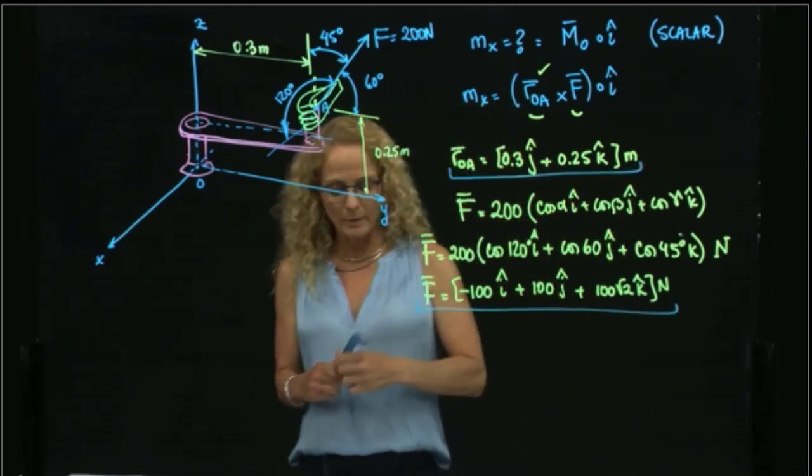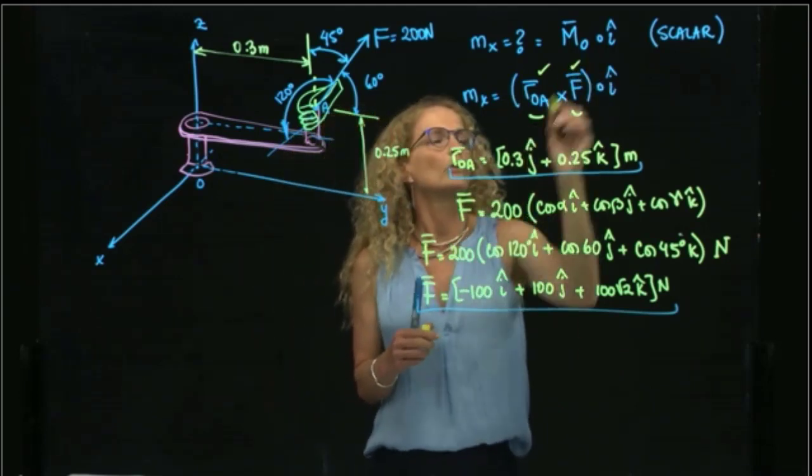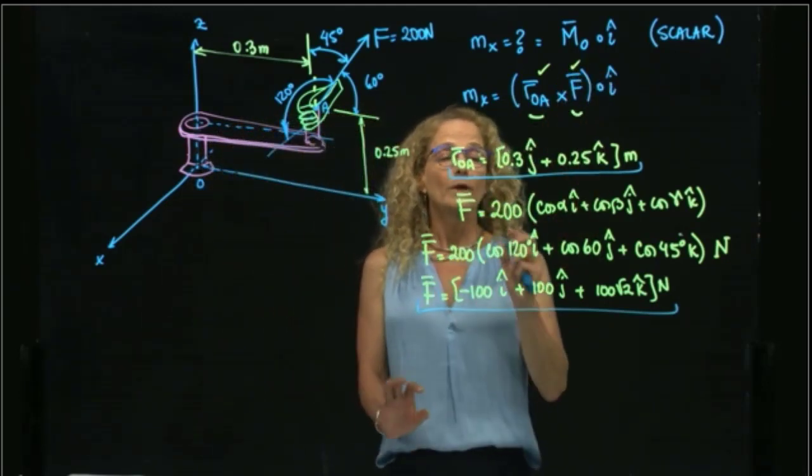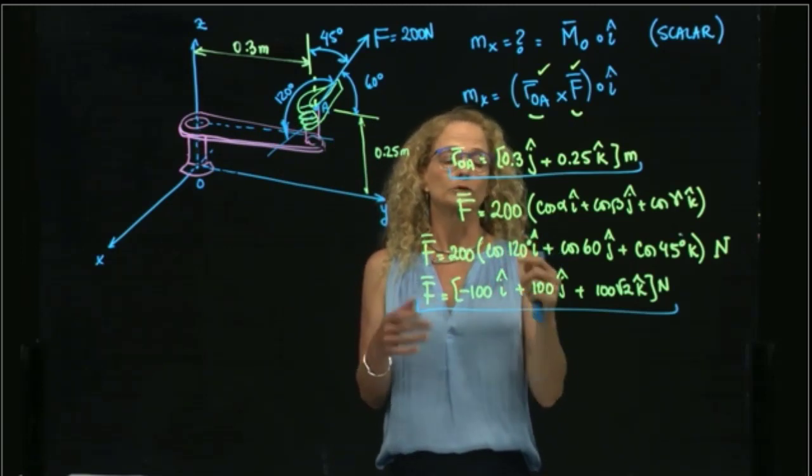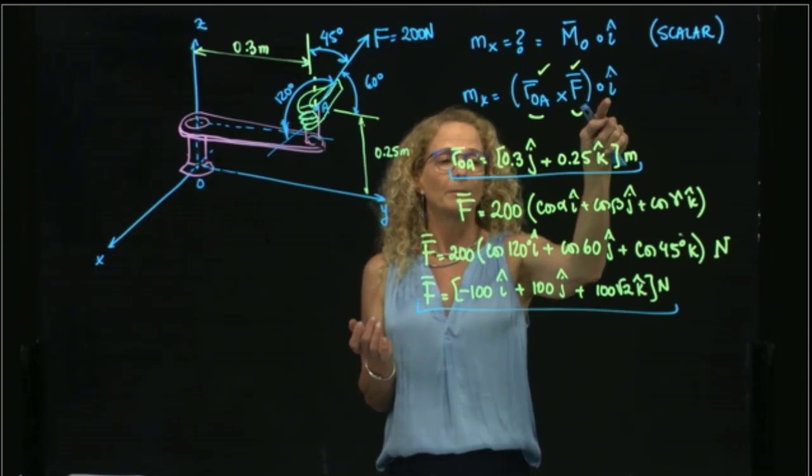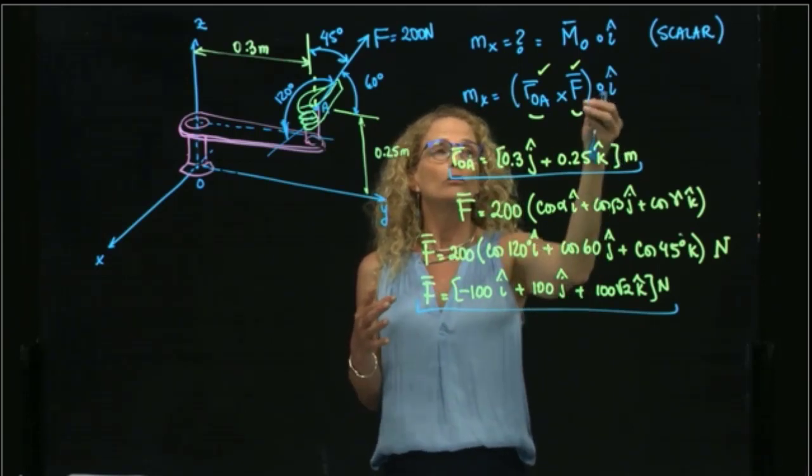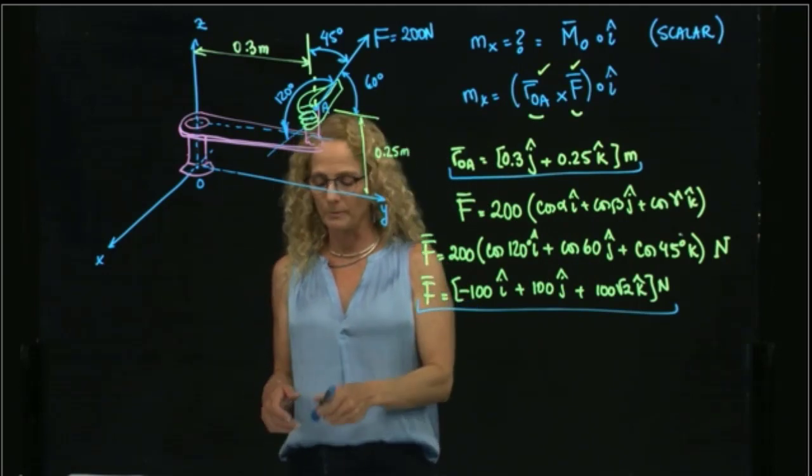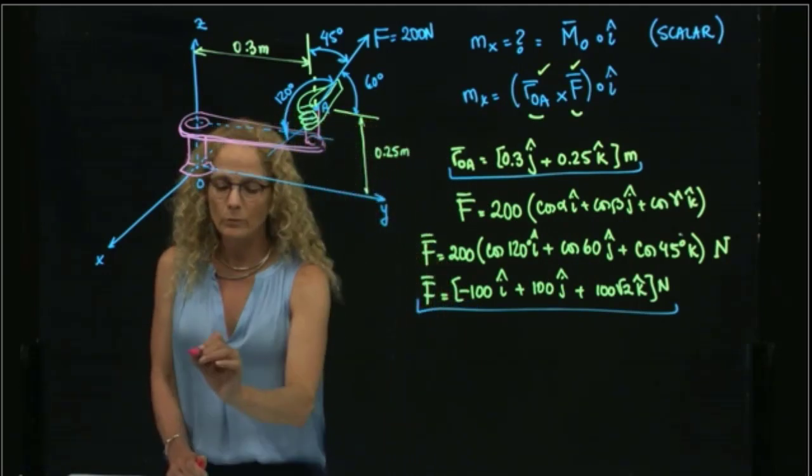And this value over here is the force. So we were able to find both values that we need. Now, we can either have two approaches. Either we multiply those two vectors cross product and then multiply by I, or we include the I into our matrix when we are multiplying.